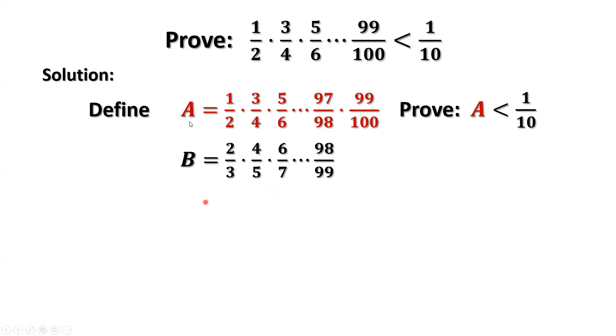What is the difference between A and B? The numerators of A are consecutive odd numbers and the denominators are consecutive even numbers. For B, numerators are consecutive even numbers. The denominators are consecutive odd numbers. Which one is bigger, A or B?